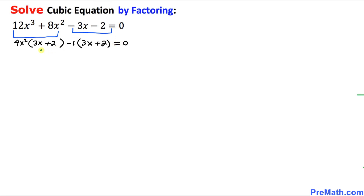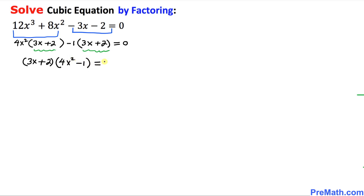Now let's look at 3x plus 2 — both factors have this in common, so we can factor it out once again. So 3x plus 2 is brought outside and in the parentheses we are left with 4x squared minus 1, which is equal to 0.